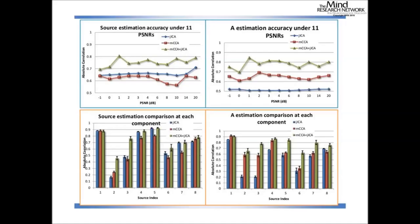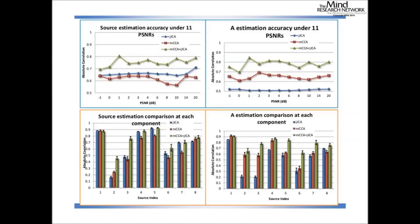The MCC plus GIC method and other multivariate methods I mentioned have been integrated into the FIT toolbox on our webpage. Simulation results show that using the MCC plus GIC method, we achieve higher accuracy toward the ground truth — in both source estimation and loading parameters — at different noise levels and source distributions.